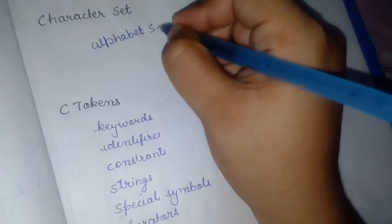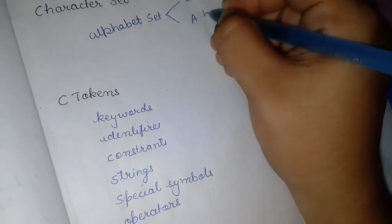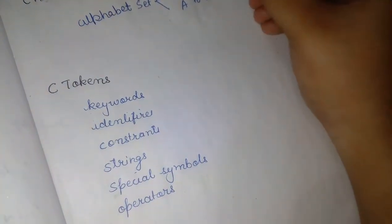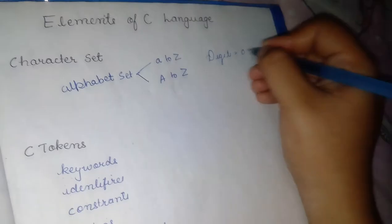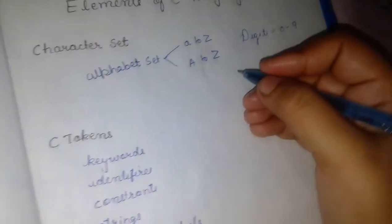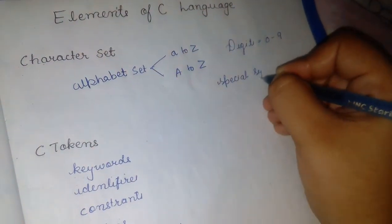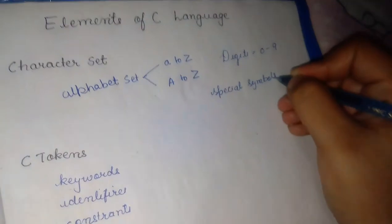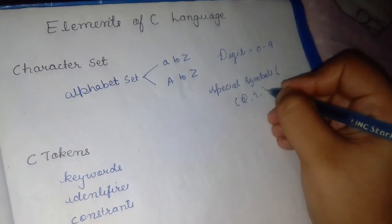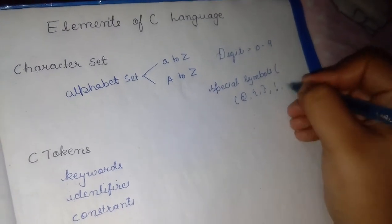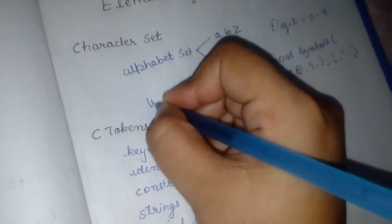Alphabet set includes small a to z, capital A to Z. We have digits from 0 to 9. There are some special symbols like at the rate, braces, question mark, etc.